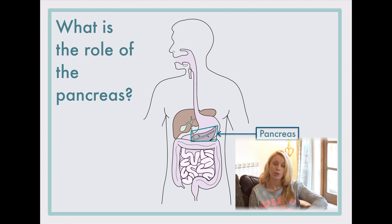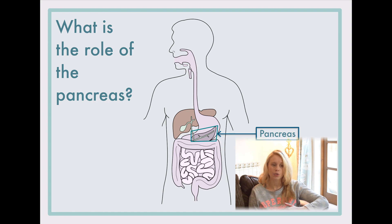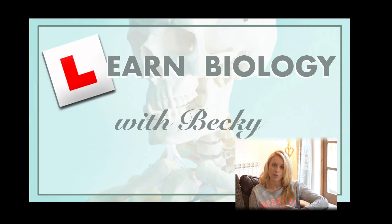Once nutrients pass into the bloodstream, they can be used by our body cells. How our body cells use what's come from our food is known as assimilation. They may make storage products — for example, if we have excess glucose we'll store it away as a chemical called glycogen in our muscles and liver. Fatty acids and glycerol may also be stored away as fat in the body to protect organs and for insulation.